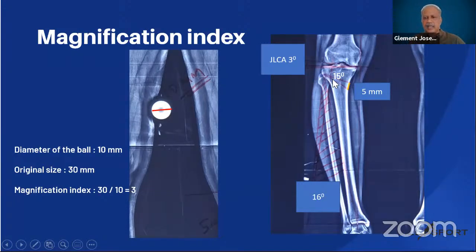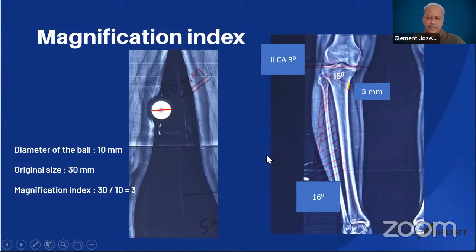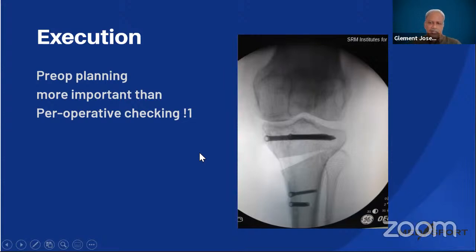The correction angle here is around 16 degrees. An important index called the joint line congruence angle indicates excessive joint opening due to soft tissue laxity — its normal value is around 2 degrees, and anything above 2 degrees should be subtracted from the correction angle. With a triangle constructed at around 15 degrees with the hinge as apex, the base measures 5 mm on the X-ray. Multiplied by the magnification index of 3, you need 15 mm of correction in reality. Pre-operative planning is much more important than intraoperative checking to avoid parallax error.